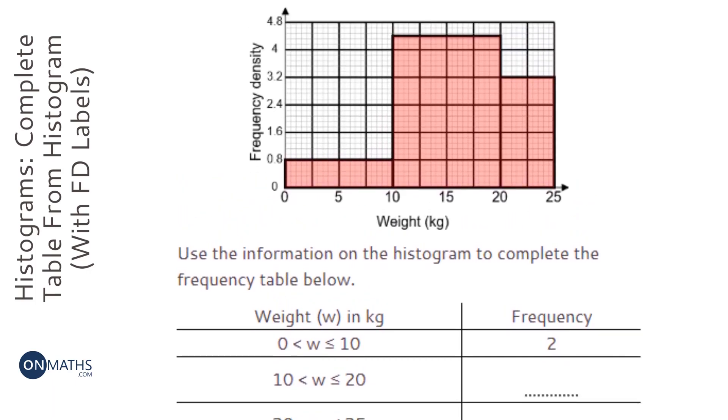Histograms follow a triangle like speed-distance-time, but for histograms, frequency is at the top, frequency density and class width are at the bottom. We're asked to find the frequencies and we've been given the class width and the frequency density.